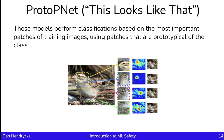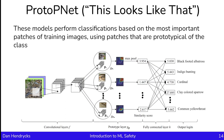It's possible to change the models themselves to make them more transparent. Proto-PNet changes the prediction pipeline to make models more transparent. These models perform classifications based on the most important patches of training images, and these patches are prototypical of the class. If we were to ask a bird watcher to explain how they're recognizing a bird, they might point to its features — talons, pointy tips, wings. One can capture this process by making the network dissect the image into prototypical parts such as wings, tips, and talons, then combine the evidence from those prototypes to make a final classification. That's the basic idea behind Proto-PNet.